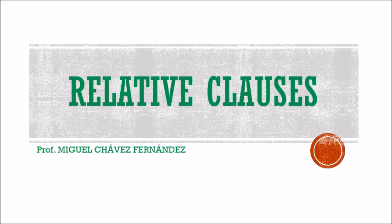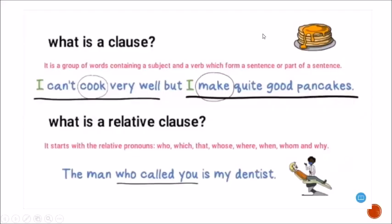Today we are going to check the topic: relative clauses. The first thing we are going to do is define what a clause is. It is a group of words containing a subject and a verb, which form a sentence or part of a sentence. In the example, we have two clauses: 'I can't cook very well' and 'I make quite good pancakes.' In green we have the subject in each clause, and with a circle we identify the verb of each clause.